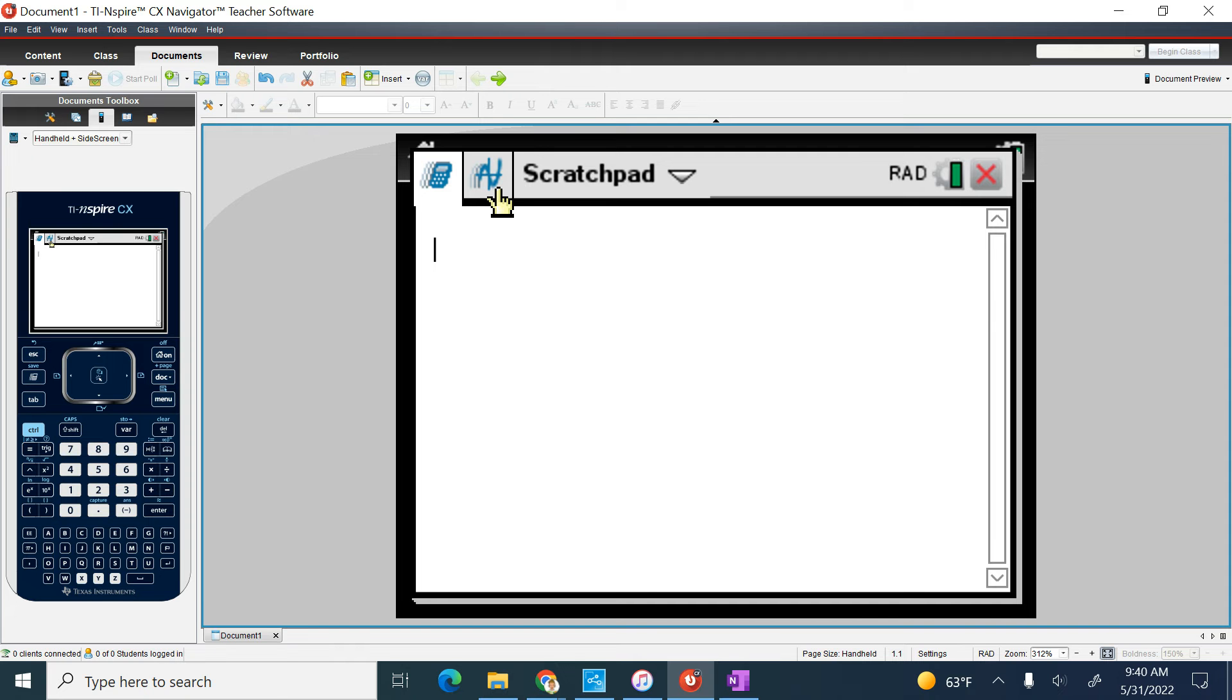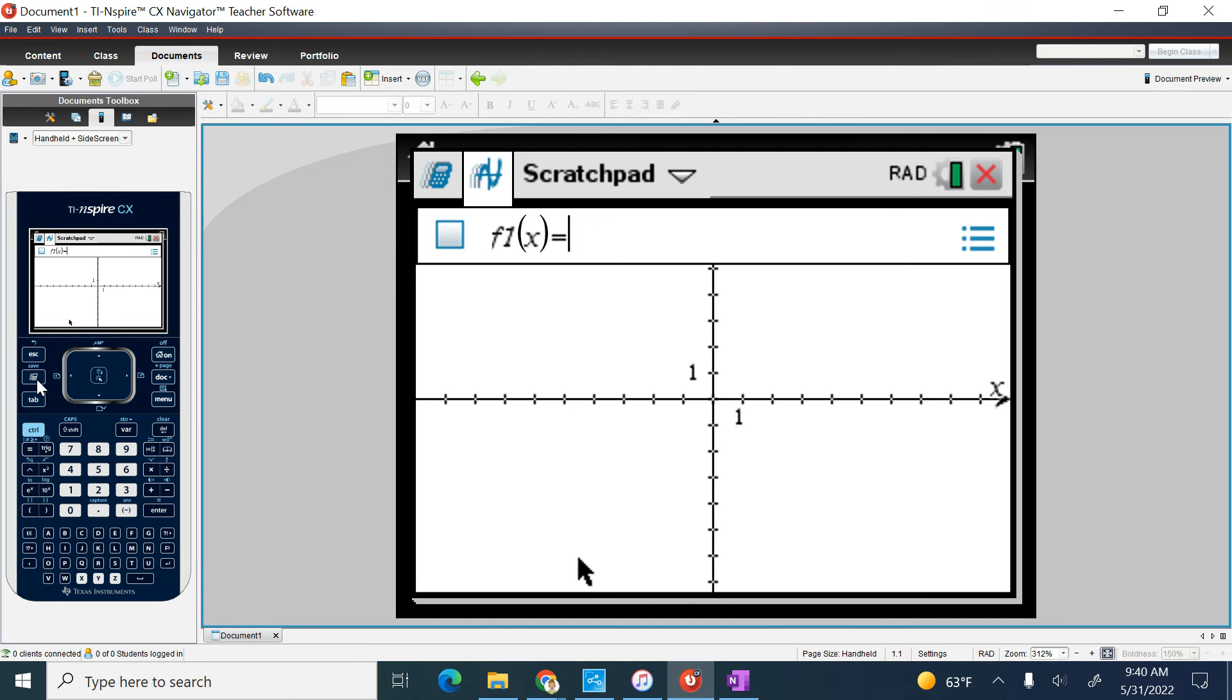I'm going to go over here to the little graphing part. Remember, I can either use my trackpad to get there, or I can use my little calculator button, my little scratchpad button, to toggle over. And if I lose this, remember, I can hit tab to get it back.